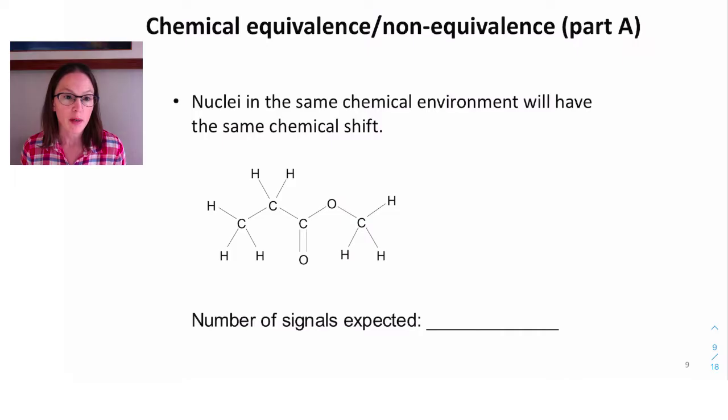For example, the three protons on the leftmost methyl group are all in the same carbon atom, which is next to the CH2, which is next to the carbonyl group. Because there's free rotation around that C-C bond, the three protons experience the same chemical environment on average. We can label them all HA.